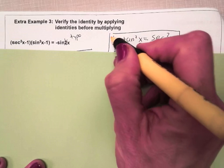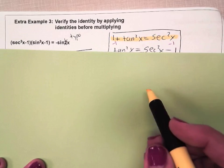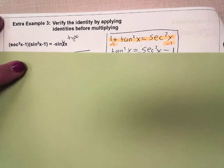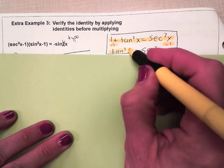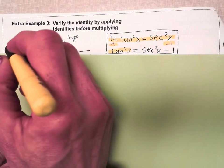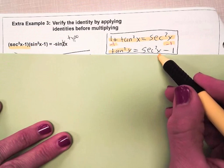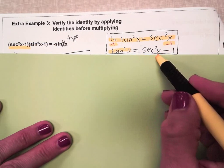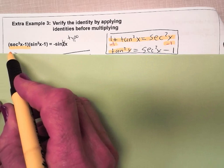if you take the Pythagorean identity from your formula sheet and subtract 1 from both sides, you get tan²x equals exactly what you have in the parentheses, sec²x - 1. So sec²x - 1 is going to get replaced with tan²x.